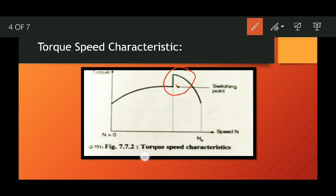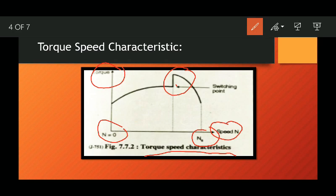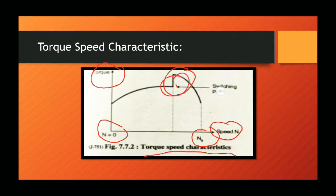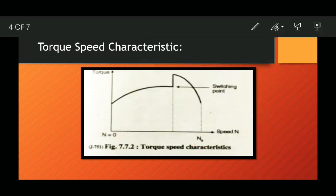In this torque speed characteristic, on the x-axis there is speed, which changes from n0 to ns. On the y-axis there is torque. The motor action changes from induction motor to synchronous motor at the switching point. This is the torque speed characteristic of reluctance motor.